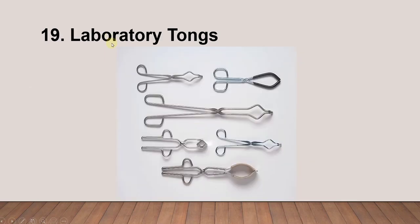Next is laboratory tongs. As you can see, we have different sizes. For example, this one can be used for an Erlenmeyer flask, and this other one can also hold an Erlenmeyer flask. We can also use tongs for the boiling flask. So you can see there are different tongs available.